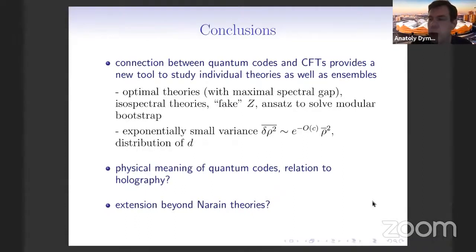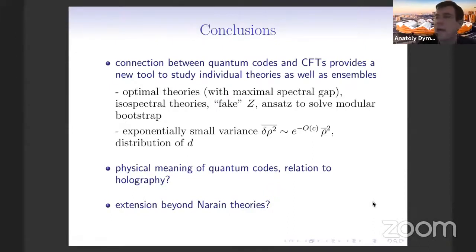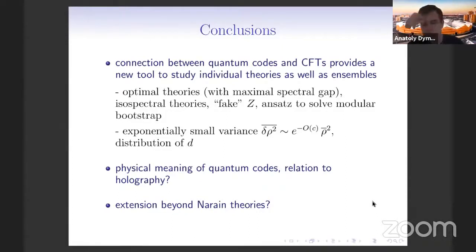Now, the question is whether you can understand those two CFTs as being continuous deformations. The code CFTs I discuss here — this is a discrete family, because the family of codes is a discrete family. You have discrete vector spaces with binary components. There is a finite number of codes of given length. There is no obvious way how you can deform that. So the examples of isospectral theories we have are certainly discrete examples. And I suspect very strongly that if you start deforming those theories, they will stop being isospectral. I did not check that, but this is my suspicion.